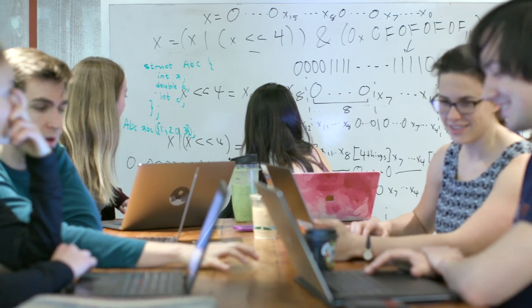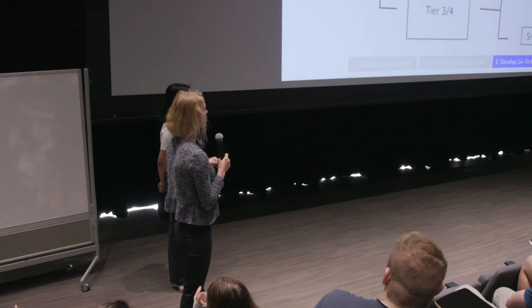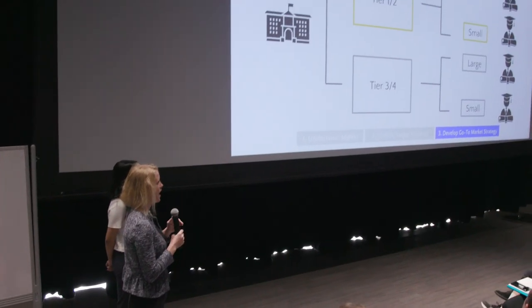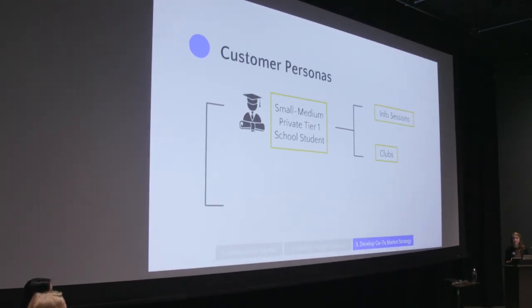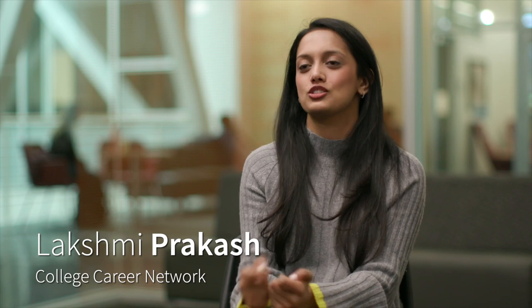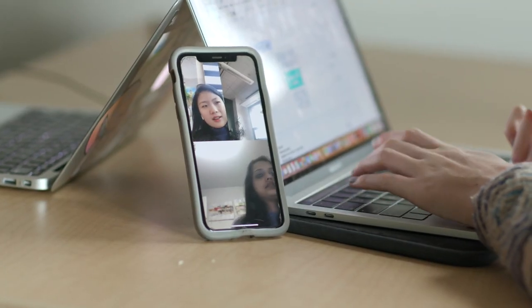The MS&E senior capstone project really brings it into three main buckets: first you have your quantitative analysis, then you have to translate that data into a more qualitative strategy, and then you have to be able to communicate and share those ideas with the rest of the world. That's something that MS&E does really well — gives you the arsenal, the toolkit that reaches across a lot of different boundaries so that you can break a really unstructured problem down into a well-scoped problem and ultimately deliver an action plan.